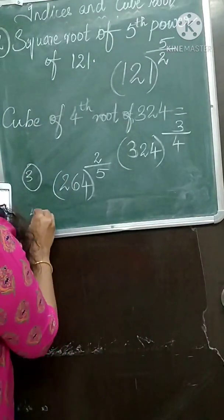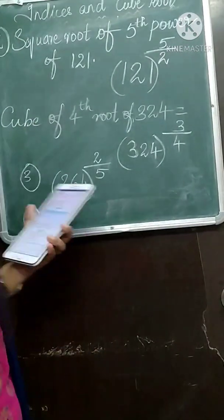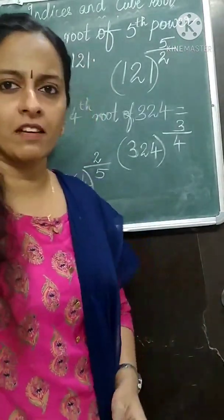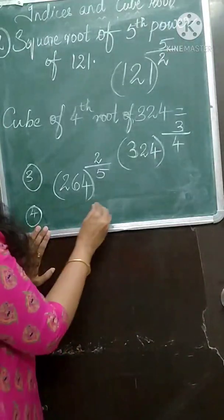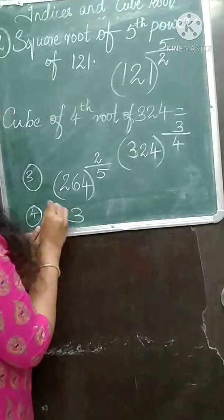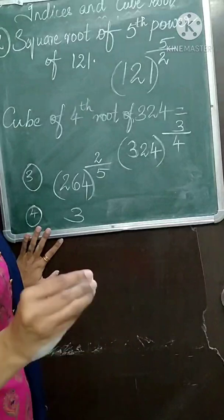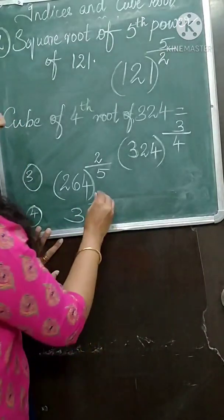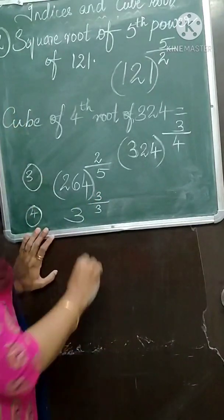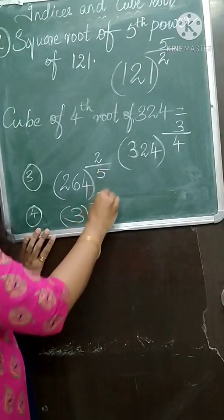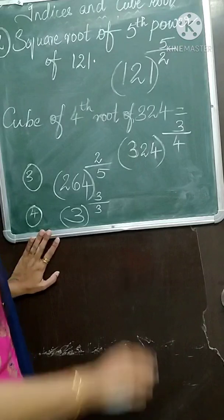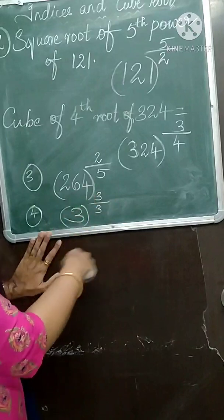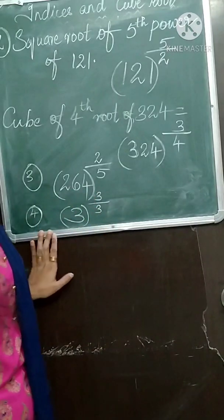The fourth question: cube of cube root of 3. Cube root means root is also 3, and cube of means power is also 3. So you write 3 raised to 3 upon 3. It will be written in index form this way.